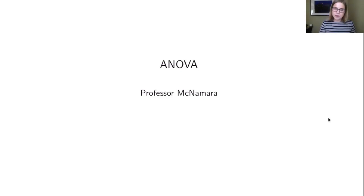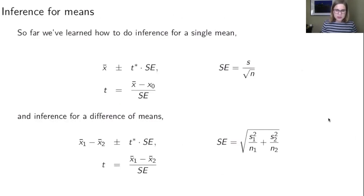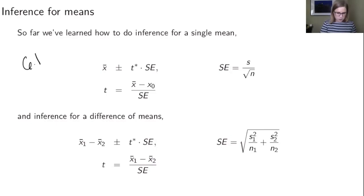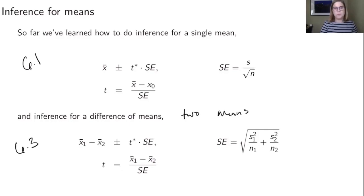We're starting this week with ANOVA, section 8.1 from the LOC5 textbook. We've done a couple of different kinds of inference for means before: inference for a single mean in 6.1, and inference for a difference of means in 6.3. So if you had two means you could do that, but what if you have more than two means?